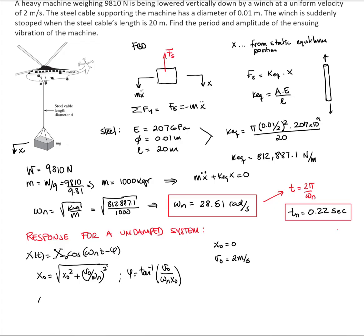So, we can calculate the amplitude. The initial position is equal to 0. And then, the amplitude will be just velocity over omega n. The velocity is 2 meters per second, and the natural frequency is 28.51. Therefore, the amplitude is equal to 0.0701 meters.